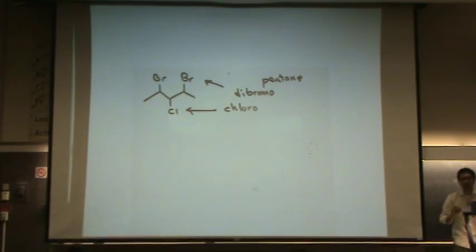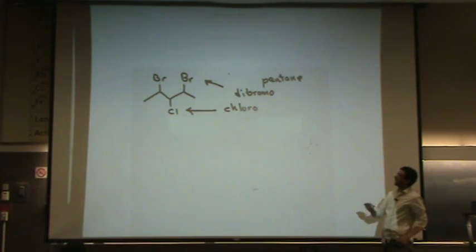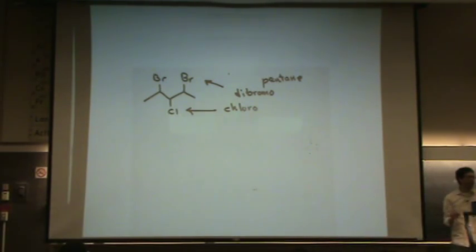So, you basically take the suffix off and put an o on the suffix. So, fluoro, chloro, bromo, iodo. Those are your four halogens.